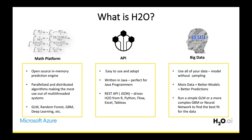H2O also has a robust API. The platform is written in Java, but since data scientists use R and Python, we created an SDK that allows H2O to be driven from R, Python, or H2O Flow, which is our web GUI. You can also use it through Excel or Tableau. This flexibility across user interfaces is a real strength of H2O.